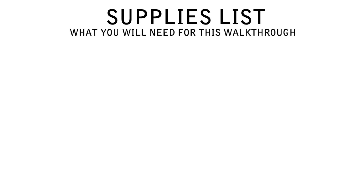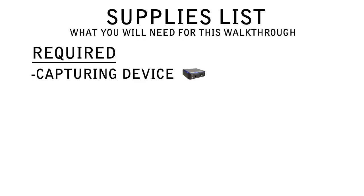One of the first things you're going to need is a capturing device. Personally, I use the Hauppauge HD PVR, but there's other options out there such as the Blackmagic Intensity Pro. I don't suggest getting the Dazzle — even the HD version, the quality isn't even that good and people just generally won't want to watch your videos. So I suggest going out and purchasing the Hauppauge HD PVR if you plan on making professional YouTube gaming videos.